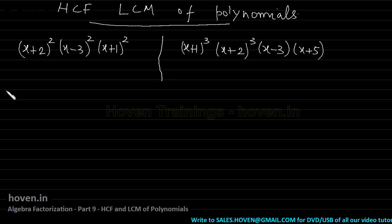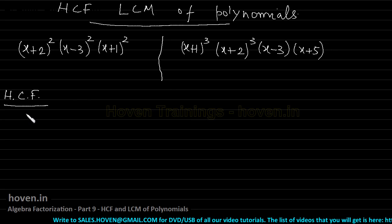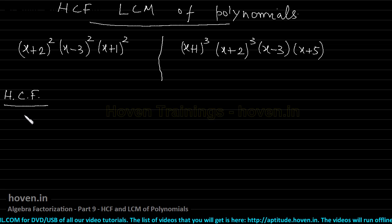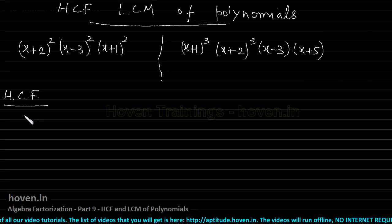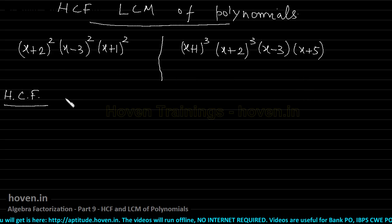Now how do we find the HCF? The full form of HCF is Highest Common Factor. You must already know this from number theory. Coming straight to the point — how to find HCF when we have two polynomials that are already factored. The technique is very simple.